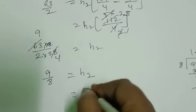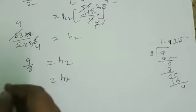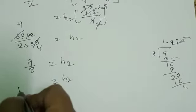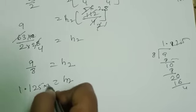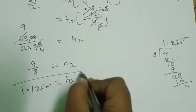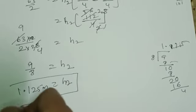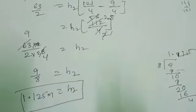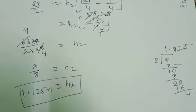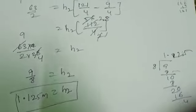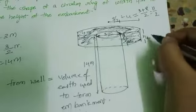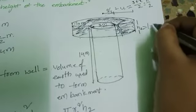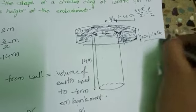H2 equals 1.125 meters. Therefore, the height of the embankment is 1.125 meters. H2 equals 1.125 meters. That's all.